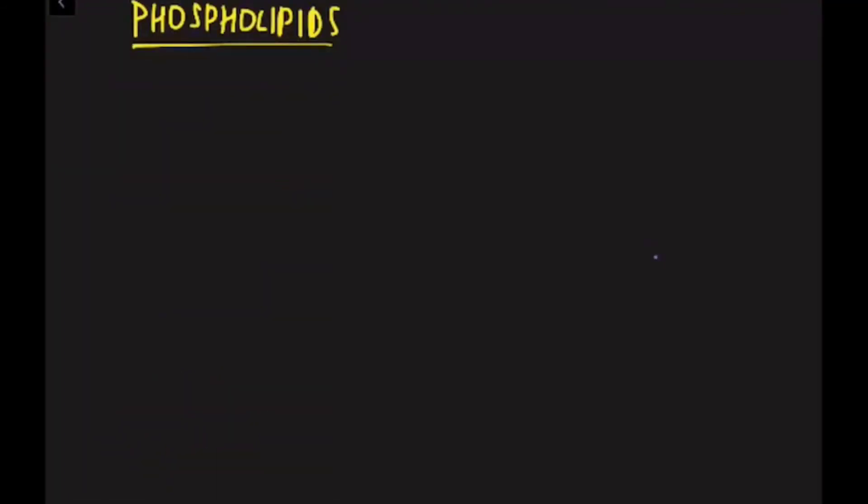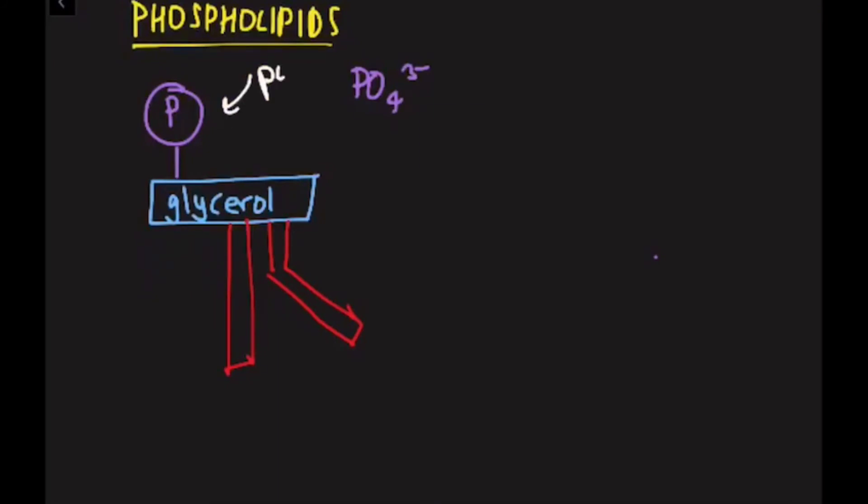Next, we're going to be looking at phospholipids. In a phospholipid, you still have your glycerol molecule. Except this time, the glycerol molecule is only attached to two fatty acids. The third hydroxyl on the glycerol is actually bonded to a phosphate group, which is PO4 3-. Now the phosphate group in this molecule is polar, and the hydrocarbon chains are non-polar.